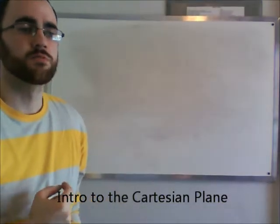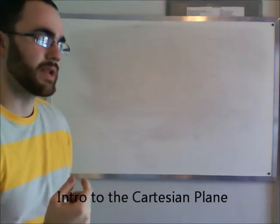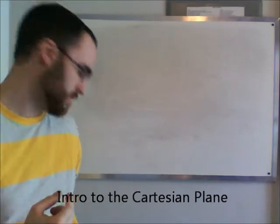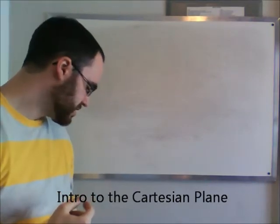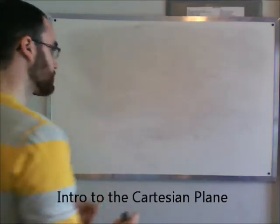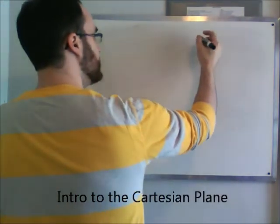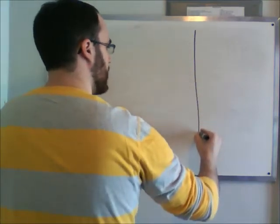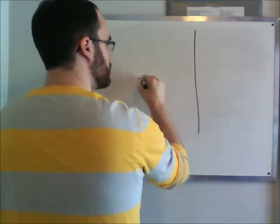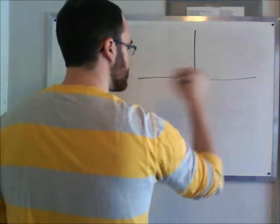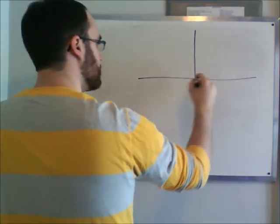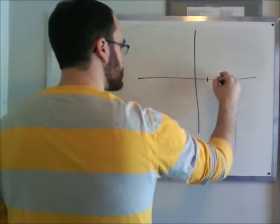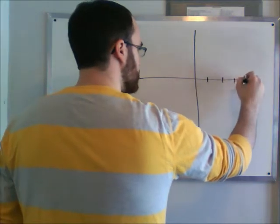We're now going to be talking about something very important in mathematics, and that's a thing called the Cartesian plane. The Cartesian plane is basically a big huge crosshairs with numbers that go along each line.